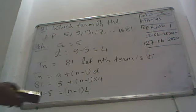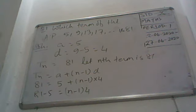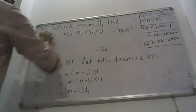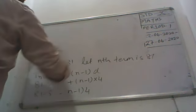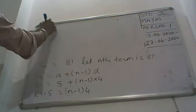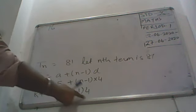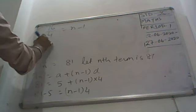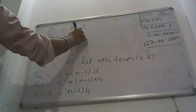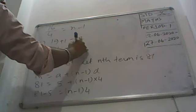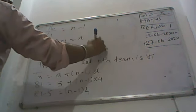So we will get our term very soon here. So now this will become here. So 81 minus 5 is how much? 76 by 4 is equal to N minus 1. That means 19 plus 1 is equal to N, so 20th term is 81.